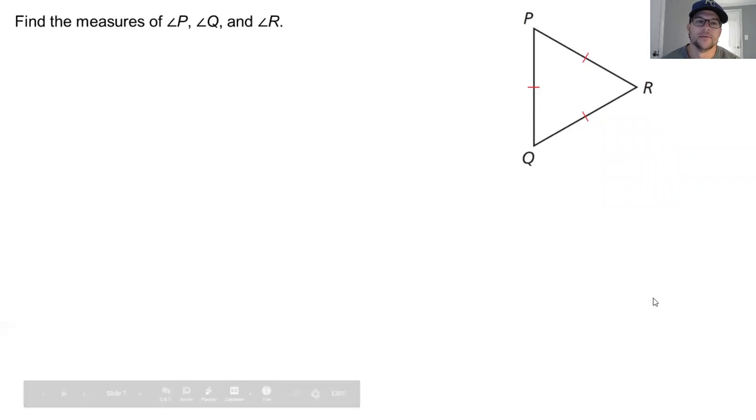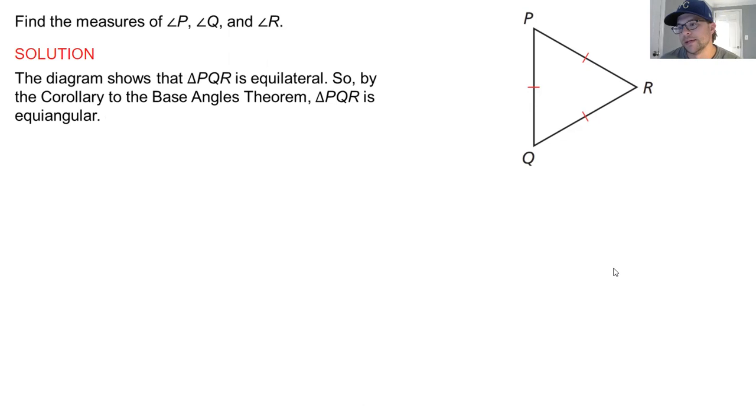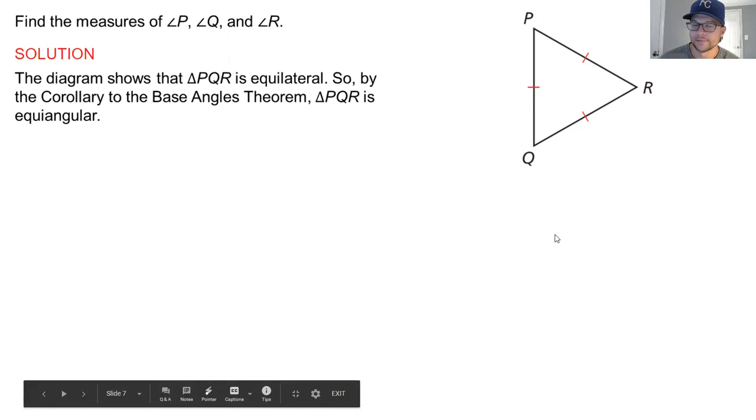So find the measure of angle P, Q and R. Well, this triangle that we are given is equilateral because PQ is congruent to QR is congruent to RP. All three of those markings are made right here. So based on the corollary to the base angle theorem that we just talked about, PQR is also equiangular and that means that all three angles are equal to each other and they have to add up to equal 180 degrees.